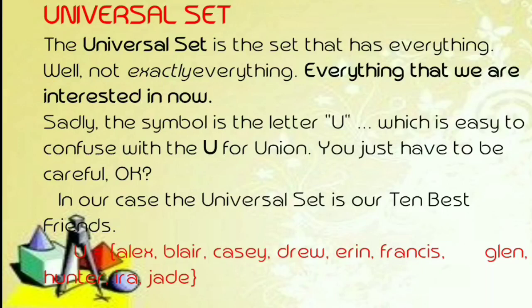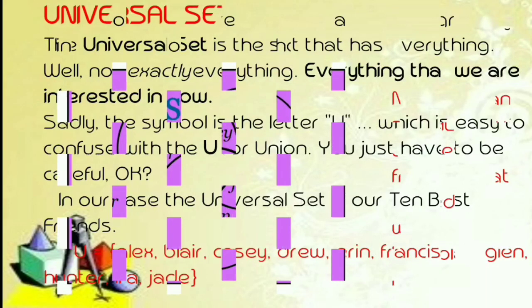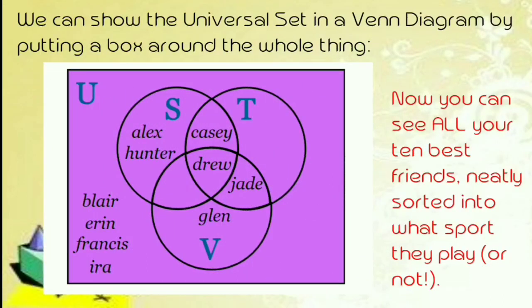Ang universal set ay kasama ang lahat — lahat ng pagpipilian natin. Pero ito ay medyo nakakalito sa letter ng malaking U at U para sa union, kaya kayo ay maging careful. Magamit tayo ng malaking letter U tulad nga sa alphabet para sa universal set, samantalang parang magnet na letter U para sa union. We can show the universal set in a Venn diagram by putting a box around the whole thing. Now you can see all 10 best friends neatly sorted into what sport they play or not — sila parang 10 ang nasa loob ng universal set.